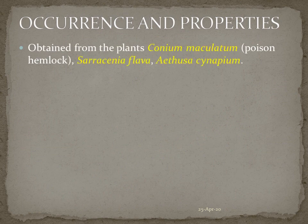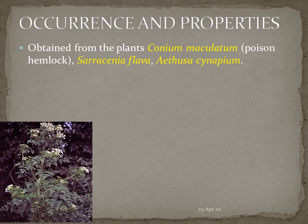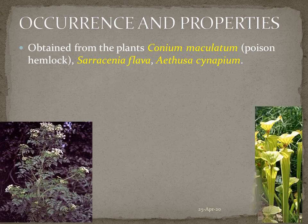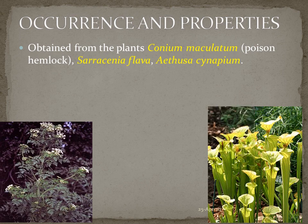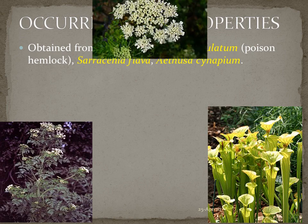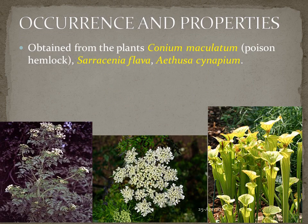Conine, an alkaloid, is obtained from plants. The important plants from which conine is obtained are Conium maculatum, Sarracenia flava, and Aethusa cynapium. Conium maculatum is also known as poison hemlock. Sarracenia flava is the yellow pitcher plant, commonly found in European countries. And this is Aethusa cynapium.